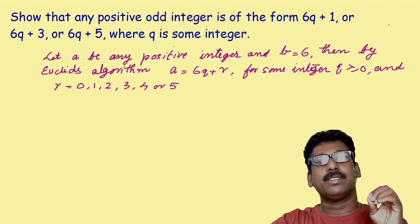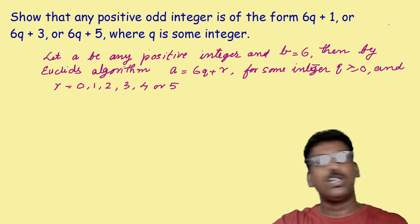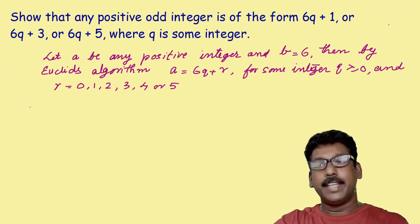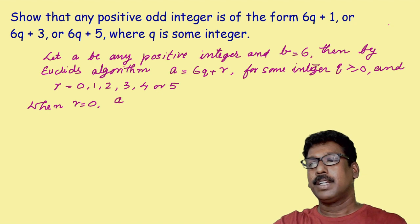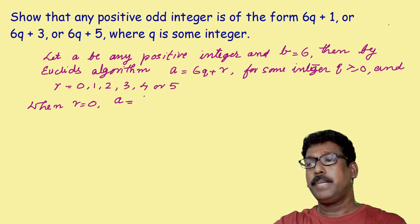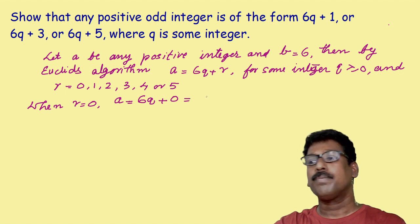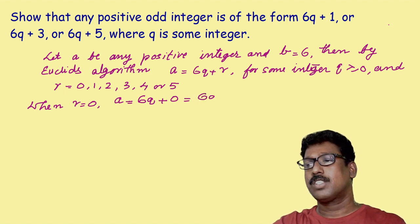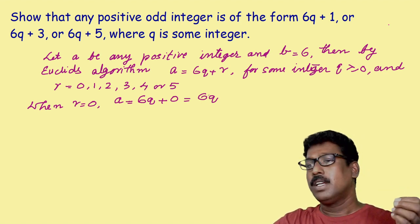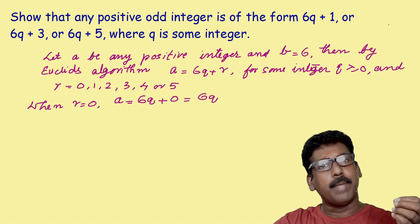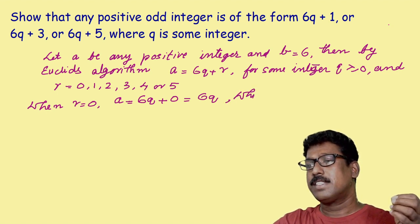Now let us substitute the values for r. When r is equal to 0, a can be written as 6q plus r, where r equals 0, which is equal to 6q. Is 6q an even number? Of course it will be even, because 6 is divisible by 2. So we can write: which is even.